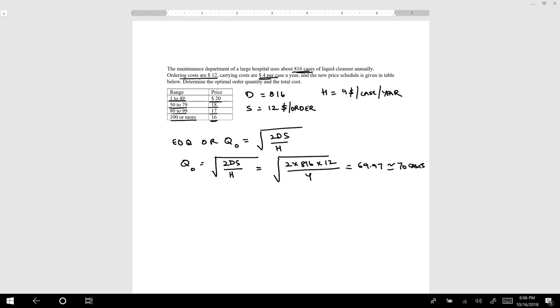Now we see that our EOQ model is telling us to order 70 cases. If you see, 70 lies somewhere in this range, so I will be getting a price of $18. Now, to calculate total cost, the formula would be HQ over 2 plus D over Q times S. In quantity discount, we will add a new component, which is price times demand.